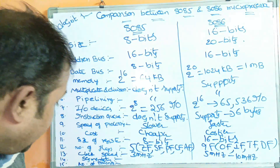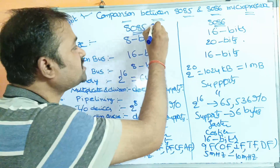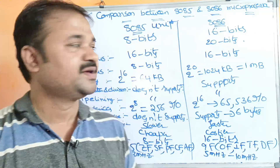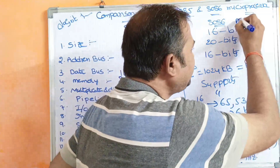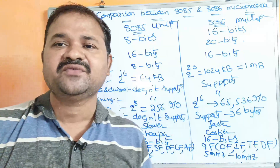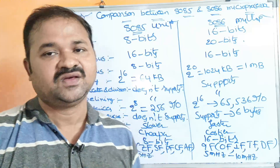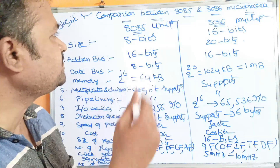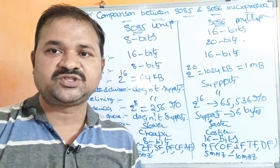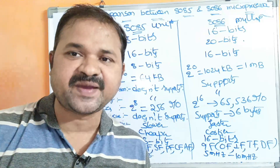The next characteristic is the number of processors. The 8085 supports only a uniprocessor system, meaning only one processor can be used. Whereas the 8086 supports a multiprocessor system, where multiple processors can work together, resulting in very high performance. These are the differences between the 8085 and 8086 microprocessors.